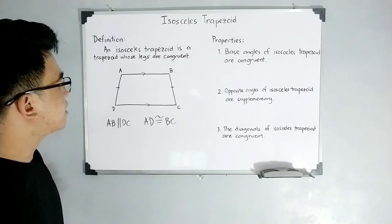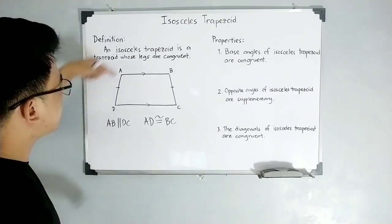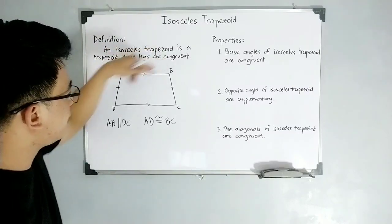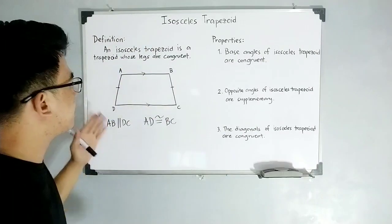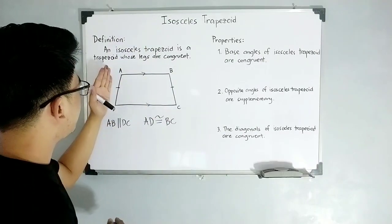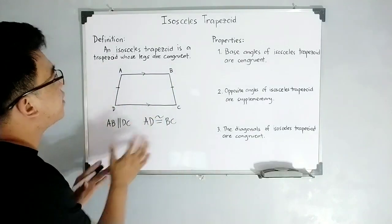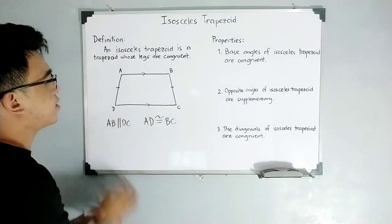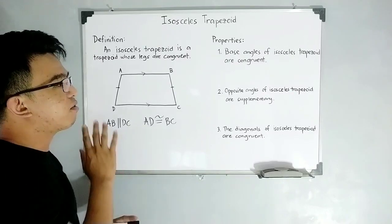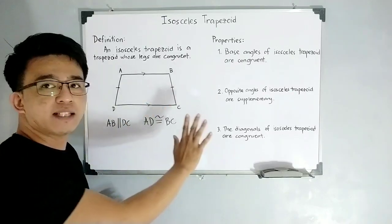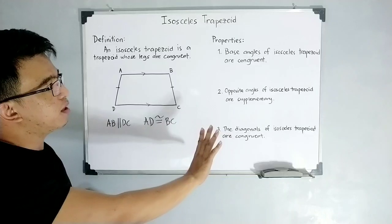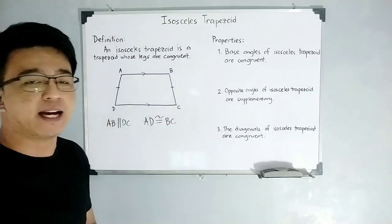This is the actual congruent legs. And another thing about this, remember this well. These are the bases. Your AB and DC are the bases. And this side is your leg, and this is the other leg. So this is just the definition of our isosceles trapezoid.